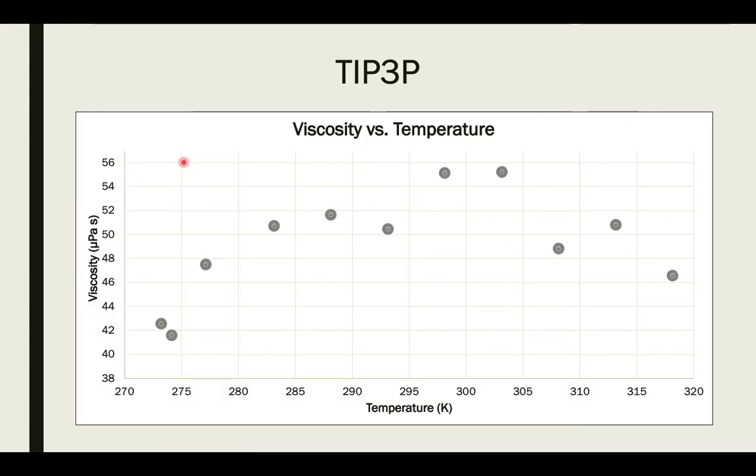The third water model that we simulated was TIP3P. As you can see here, the viscosity is, for some reason, increasing as temperature is increasing, which should not be the case. We're working on trying to figure out why this is the case, but this may suggest that the TIP3P water model is not the right one to use.